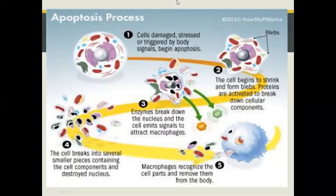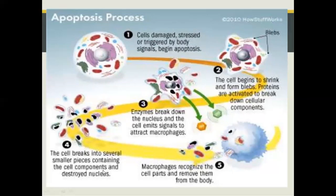Apoptosis: Golgi has a protective role in apoptosis. A newly characterized protein called Golgi anti-apoptotic protein almost exclusively resides in the Golgi and protects cells from apoptosis, through an as-yet undefined mechanism. The apoptosis process begins with cell damage, stress or trigger by body signals. The cell begins to shrink and form blebs, proteins are activated to break down cellular components. Enzymes break down the nucleus and the cell emits signals to attract macrophages. The cell breaks into smaller pieces containing cell components and a destroyed nucleus, and macrophages recognize the cell parts and remove them.